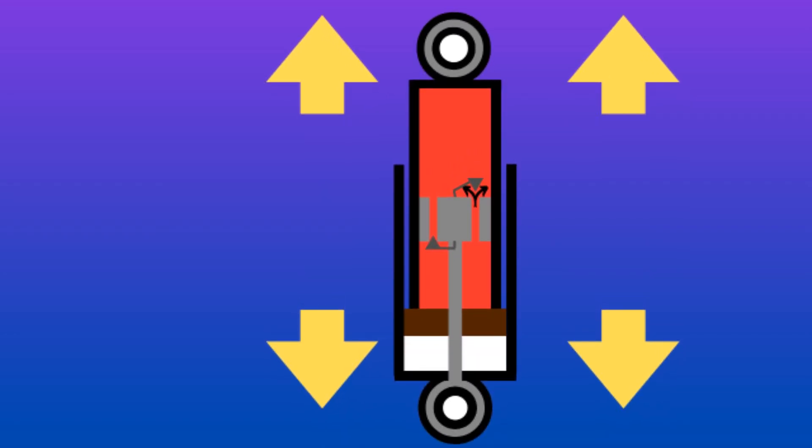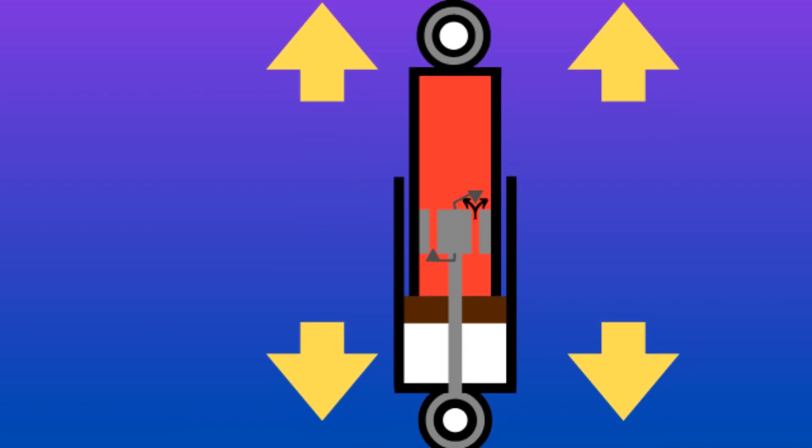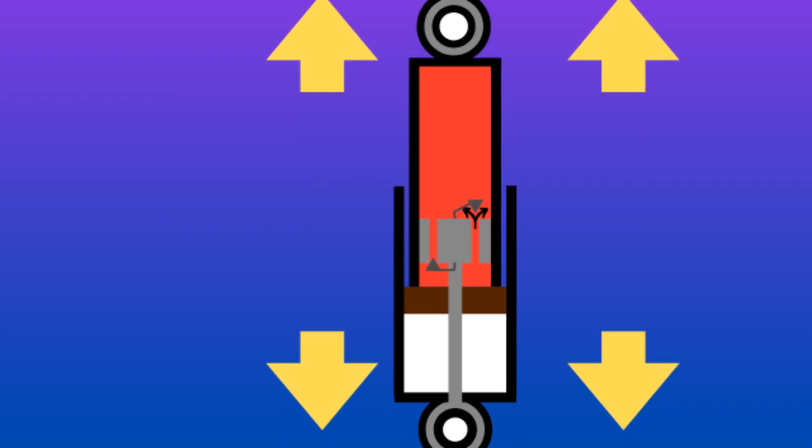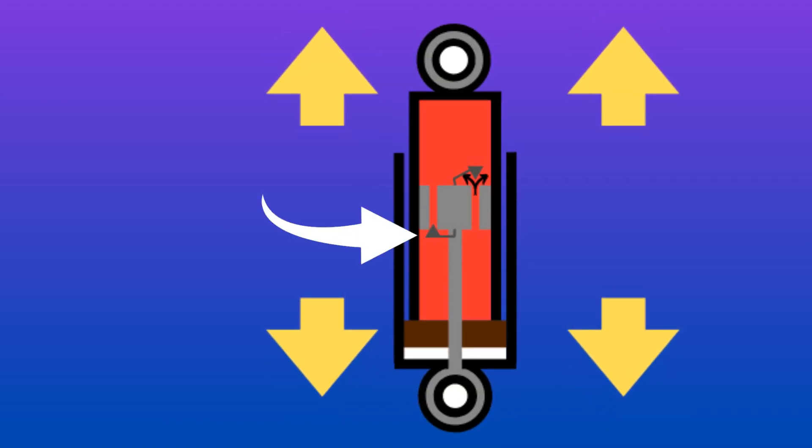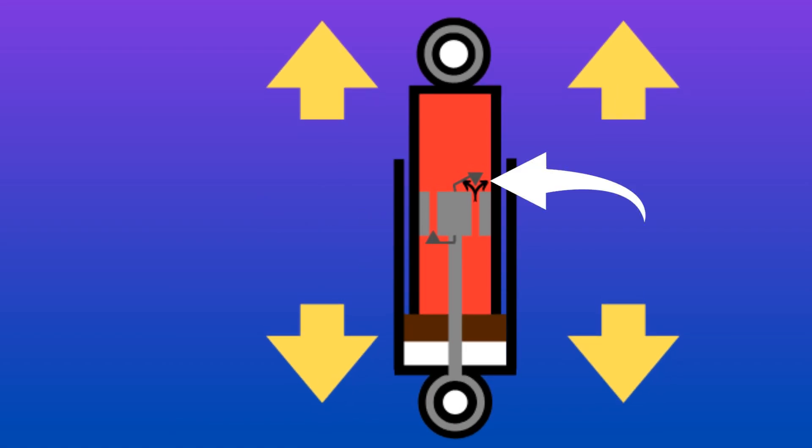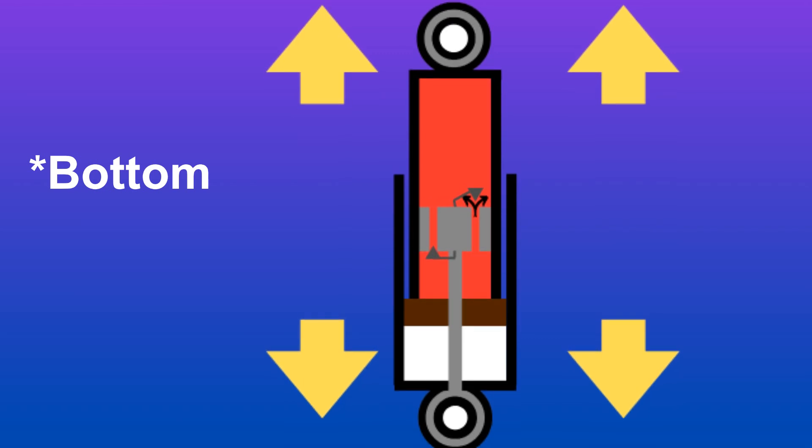When this happens, the oil in the upper chamber experiences a drop in pressure as the expansion tries to increase the volume of the upper chamber. Due to the low pressure, the valve on the left closes and the valve on the right opens, which allows oil from the bottom chamber to flow upward into the upper chamber.